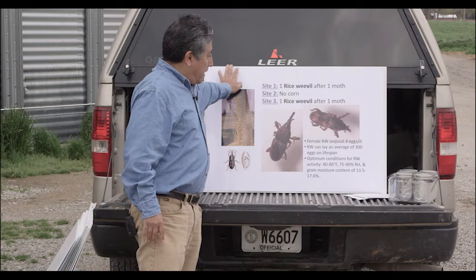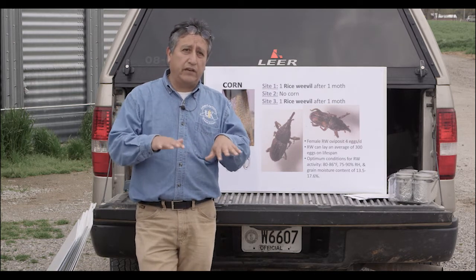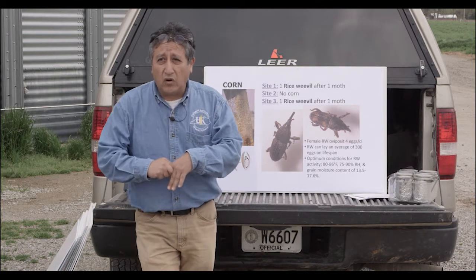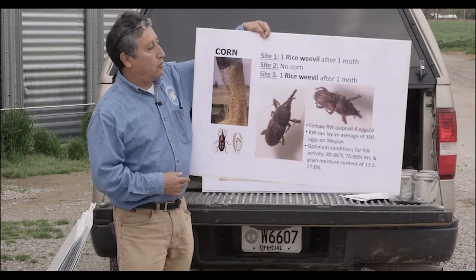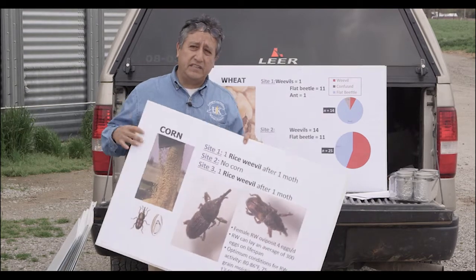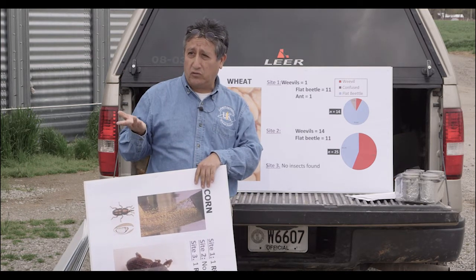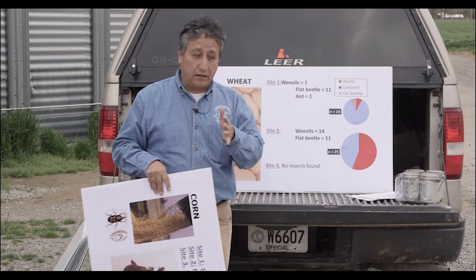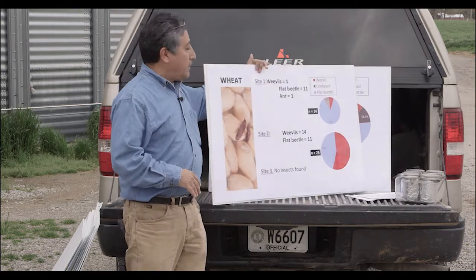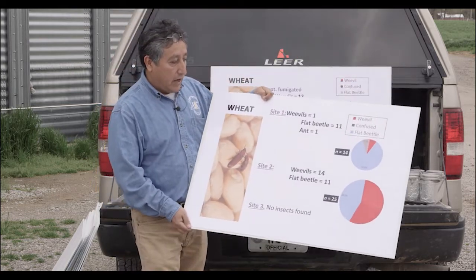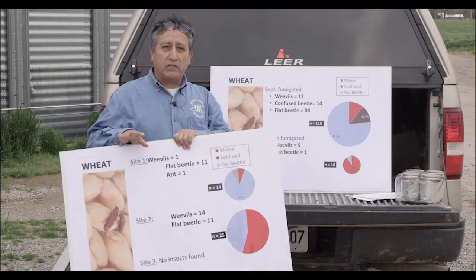Last year we did a survey of different silos here in Western Kentucky. I'm glad to say that we surveyed the area and didn't find too many insects. In corn, we surveyed three sites and didn't find many insects at all — and this year we did the same and didn't find any. It seems that farmers here are doing very good work controlling insects. We also tested some wheat and found some insect populations, but still very few. This is a small sampling done in different areas.